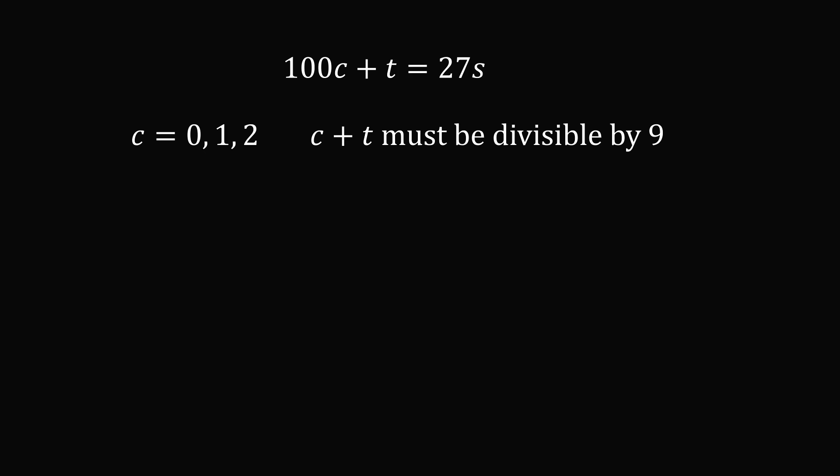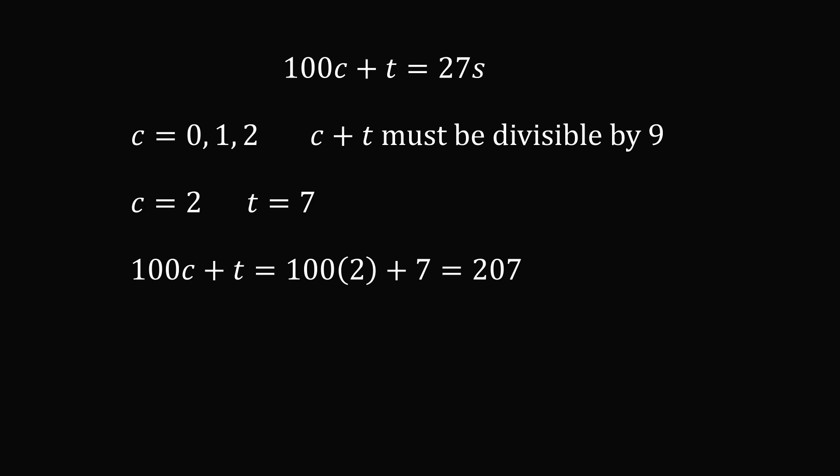Let's try C equals 2. By similar logic, the only way C plus T is divisible by 9 is if T equals 7. Substituting, 100C plus T equals 207. But 207 divided by 27 equals 7 and 2/3, so this is not a multiple of 27, and cannot equal 27S. We eliminate this case.